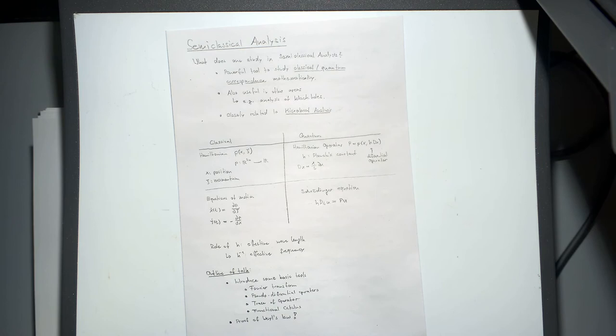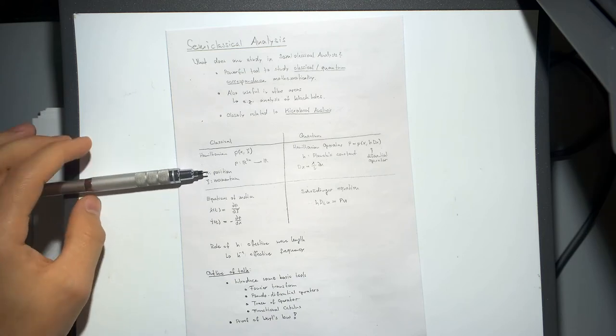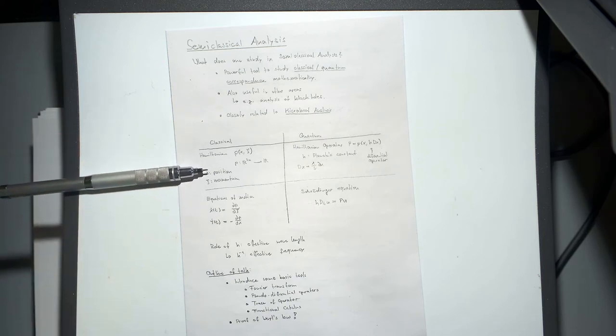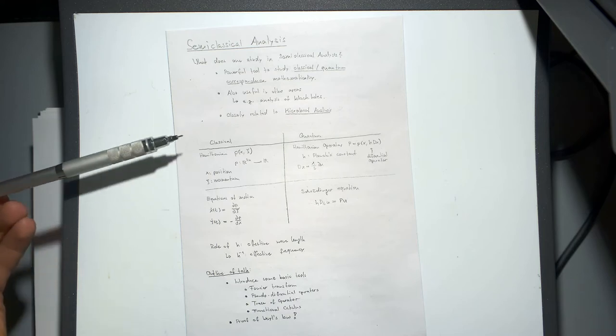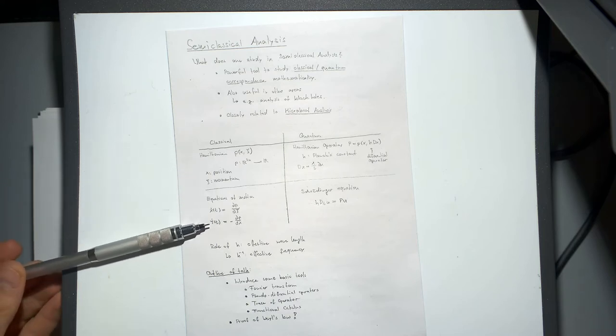Let's have a closer look at what exactly we want to study. From classical physics, we have the Hamiltonian function P, which depends on position X and momentum Xi. It's just some function from R^n to R, and it describes the energy of the system. With this Hamiltonian, we can find the equations of motion.